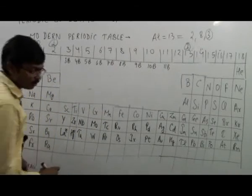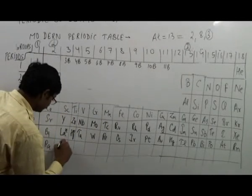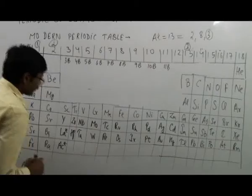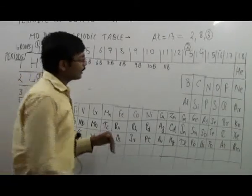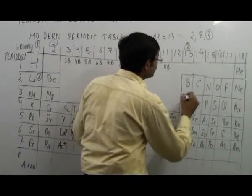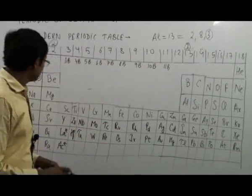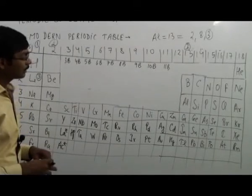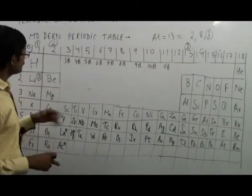And similarly, the classification goes on. We need not to remember the complete table, but we must remember the table till the atomic mass say 30 or 40. Now how to remember this table?